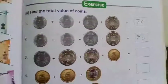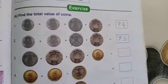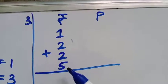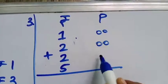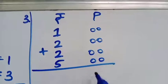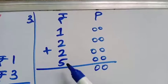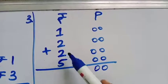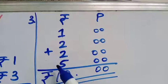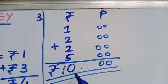Now the third question: ₹1 + ₹2 + ₹2 + ₹5. In the Rupees column write 1, 2, 2, and 5. There is no paise, so write 0 in the Paise column for each. Adding the rupees from the largest: 5 + 2 = 7, 7 + 2 = 9, 9 + 1 = 10. The total answer is ₹10.